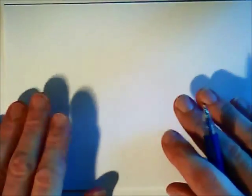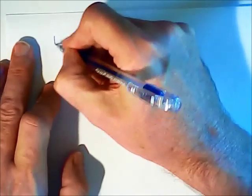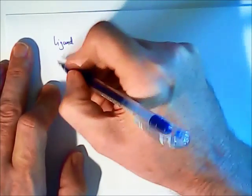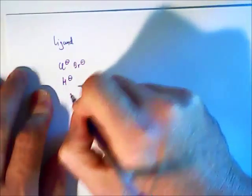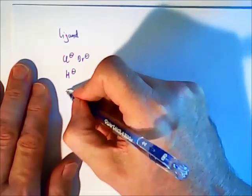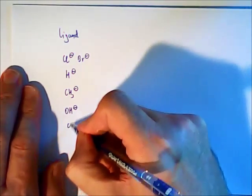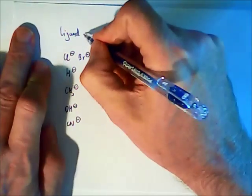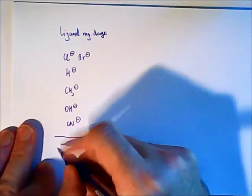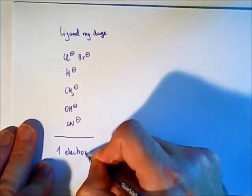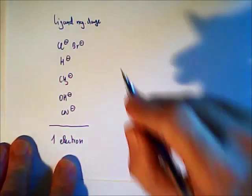For the ligand electron count, we can make a difference between three groups. We have ligands that have a negative charge. For example, fluorine minus, bromine minus, hydride H minus, methyl minus, OH minus, or CN cyanide minus. Ligands that have a negative charge, they all count as one electron. They count as if they give one electron to the bond.